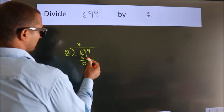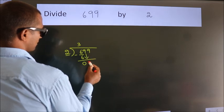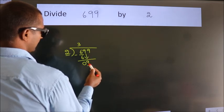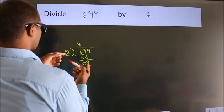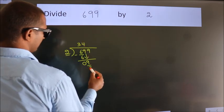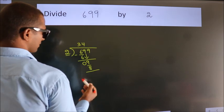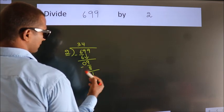After this, bring down the beside number. So 9 down. So 9. A number close to 9 in 2 table is 2 fours 8. Now we subtract. We get 1.